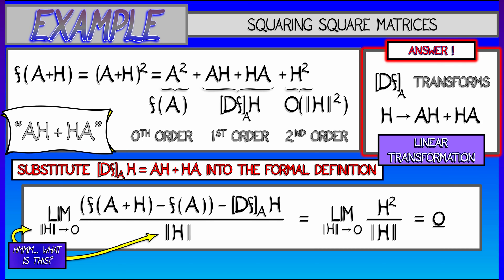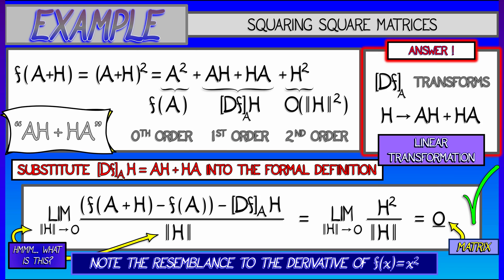So this is, in fact, the derivative of this unusual function. And notice, no partial derivatives, and it works in arbitrary dimensions. This is really a very powerful result that we've gotten by using the formal definition. And notice how it kind of resembles the derivative of f(x) equals x squared, right? It's two times x. Evaluated at A, you get two times A. We've got something very similar going on here.